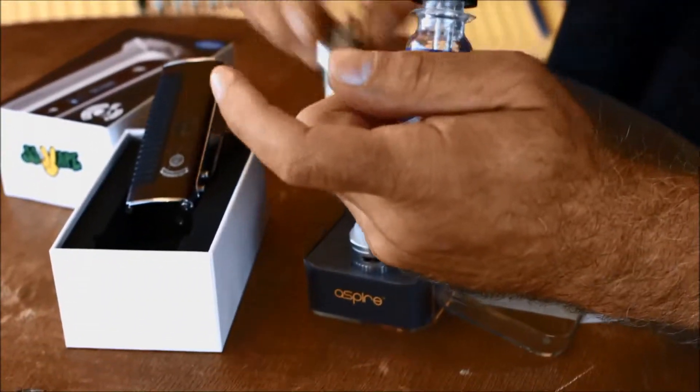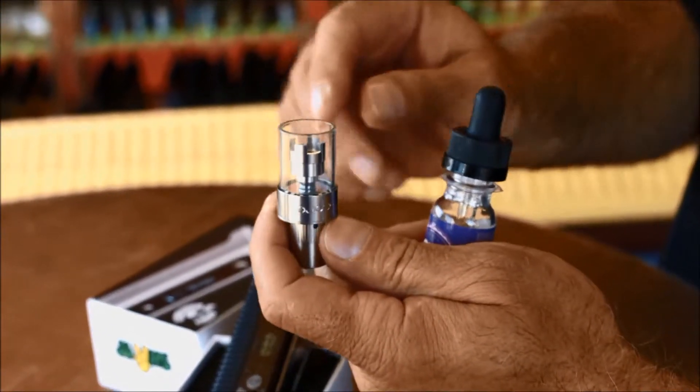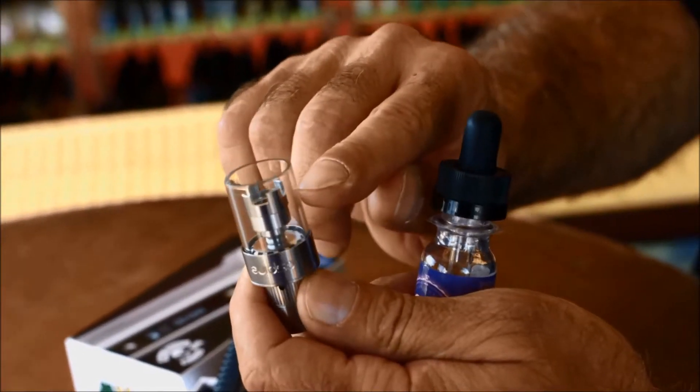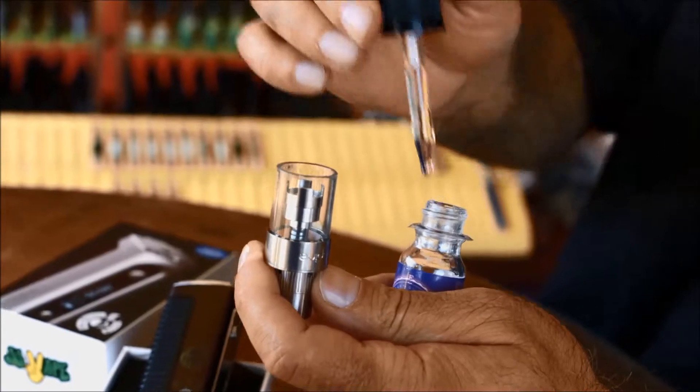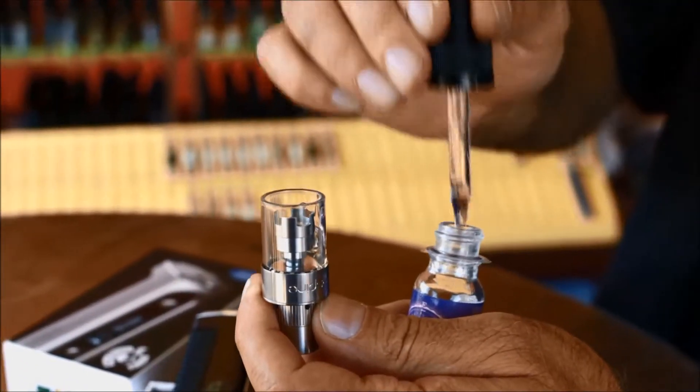Set the base aside and now let's fill the tank. You want to fill it to just below the top of the metal stem inside the tank. Just place the eyedropper between the metal stem and the glass and keep adding drops until it's full.